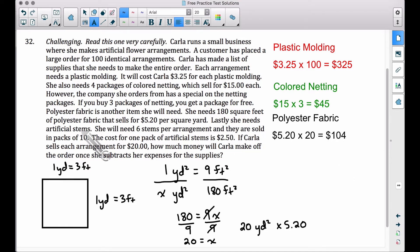Lastly, she needs artificial stems. She's going to need six stems for each arrangement. And recall that she needs to make 100 arrangements. So six stems per arrangement times 100 arrangements, she will need 600 stems in all.